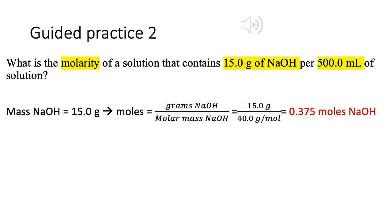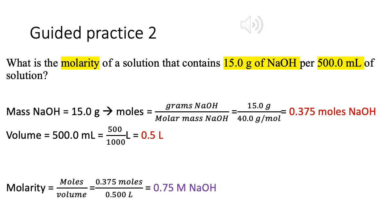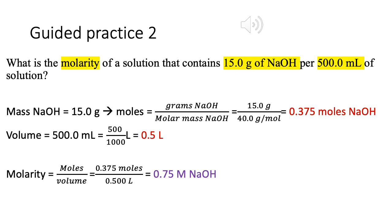15.0 grams over 40 grams per mole, you should be able to get 0.375 moles. That is how much moles we have. As per the question, volume is given - 500 milliliters. That means you need to convert that to liters. 500 divided by 1000, you get 0.5 liters.